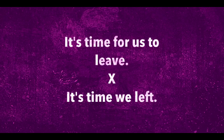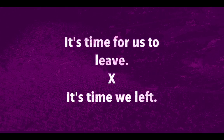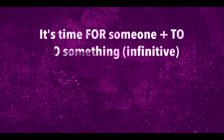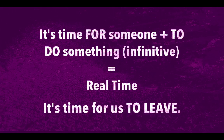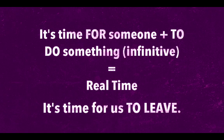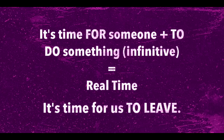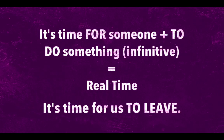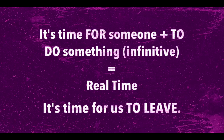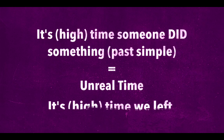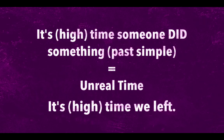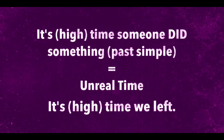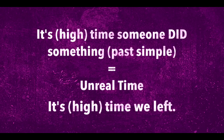What's the difference in meaning between these two sentences? This sentence describes real time — it is now the right time for the people to go away. Make sure to use an object pronoun here. On the other hand, this sentence is imaginary; it actually means you should have already left. Attention to the use of the subject pronoun.